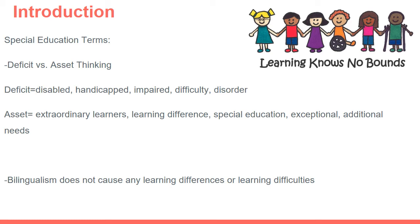There are deficit terms that educators have moved away from using to describe students who have learning differences. Deficit terms like disabled, handicapped, impaired, difficulty, and disorder are very negative in nature — they punish someone for an issue they had no control over and were born with. More positive, asset-based terms include extraordinary learners, students with learning differences, special education, exceptional students, or students with additional needs. All of these consider students' differences as an asset and in a positive light.